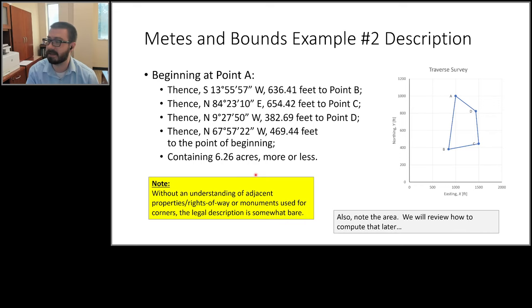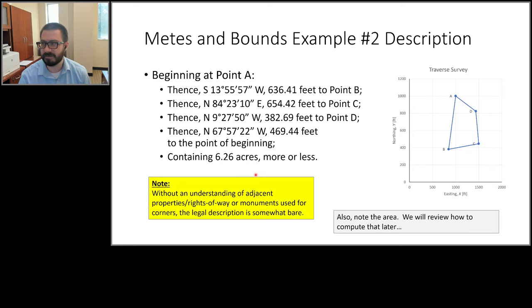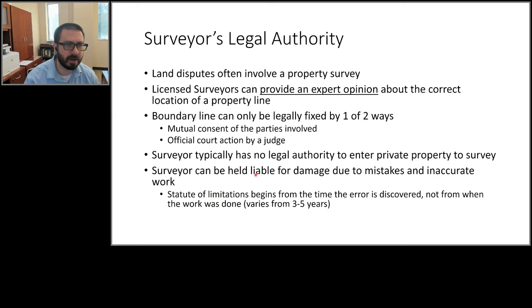Software packages like AutoCAD Civil 3D have routines that generate legal descriptions automatically. I generated this legal description using AutoCAD Civil 3D, but because the polygon traverse lacks contextual information, the output is fairly bare. The area computes to about 6.26 acres. If any of you have friends or family who own land, look at their deed — you'll probably recognize a description like this.